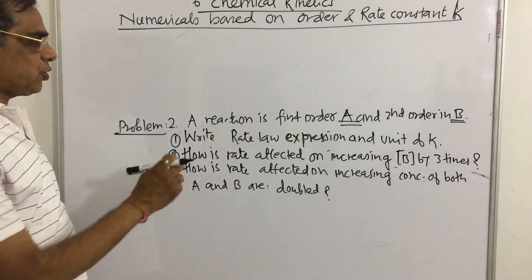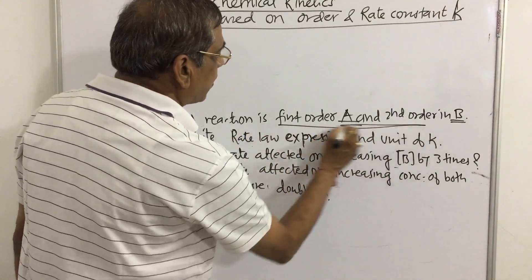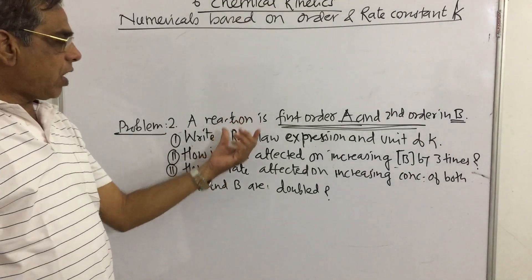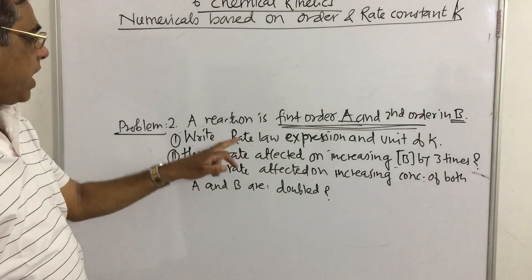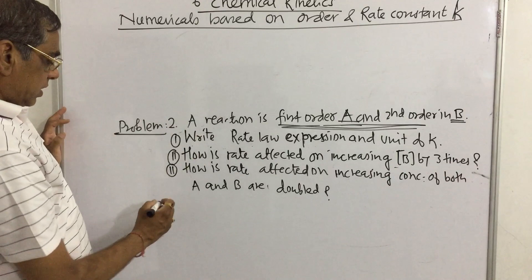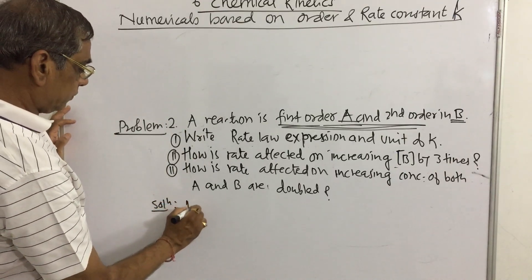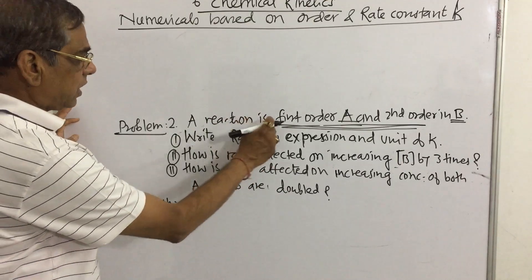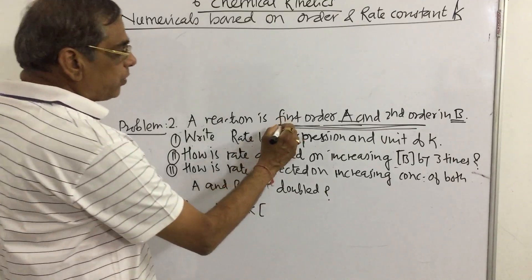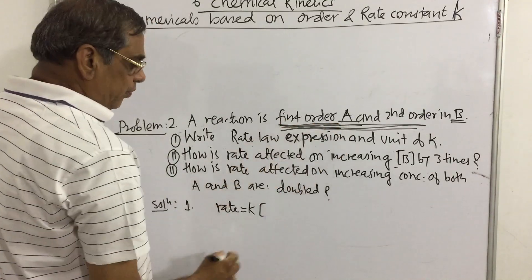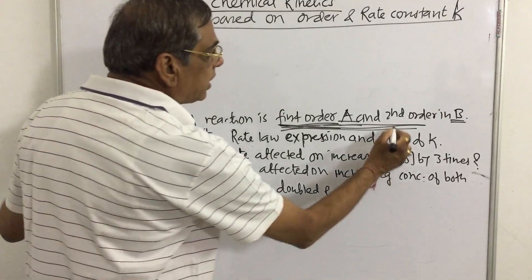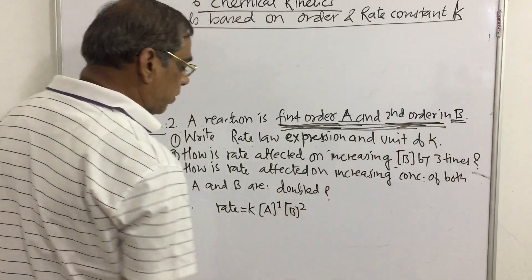How to solve it? First, write down the rate expression from the given data. According to the problem, the rate law expression is: rate equals k into concentration of A raised to the power 1, since it is first order in A, and concentration of B raised to the power 2, since it is second order in B.